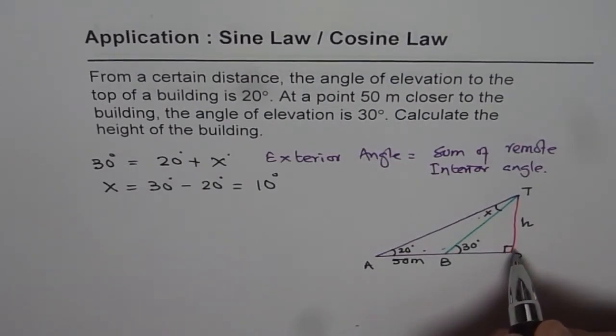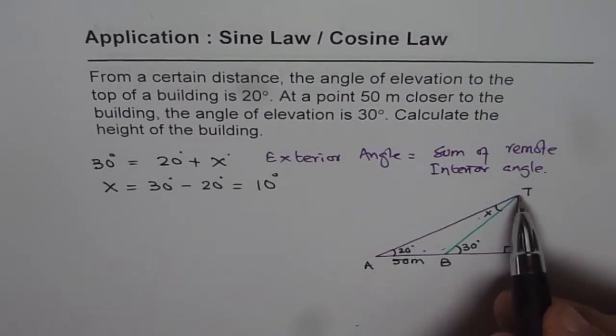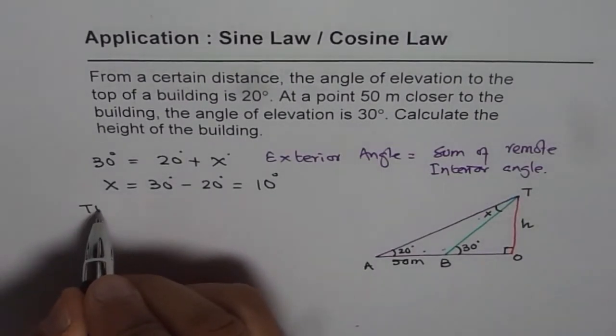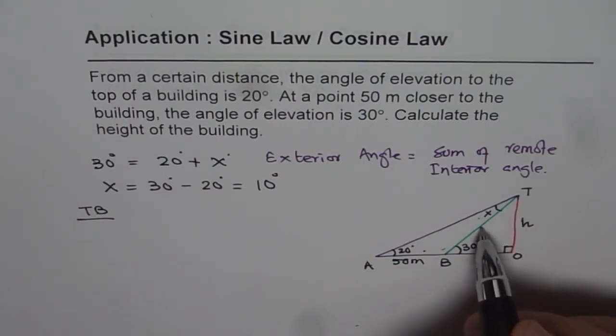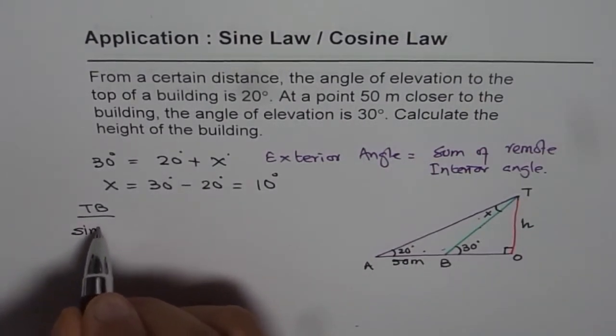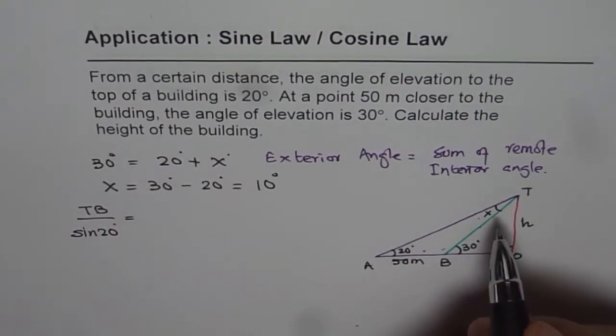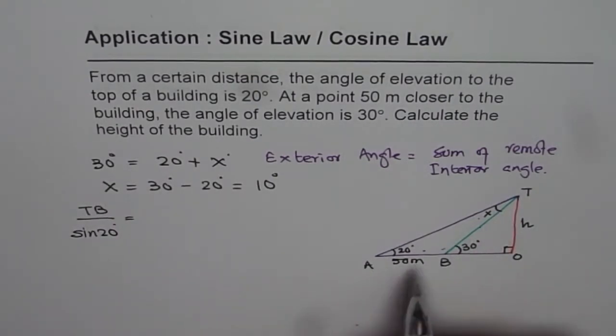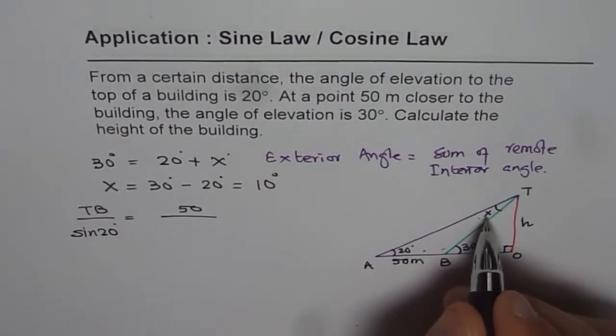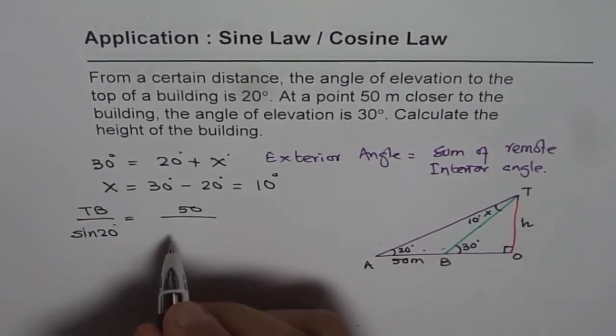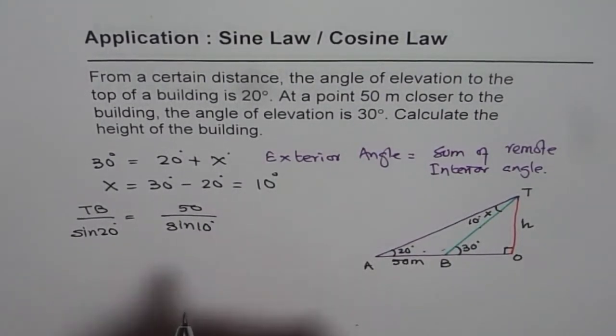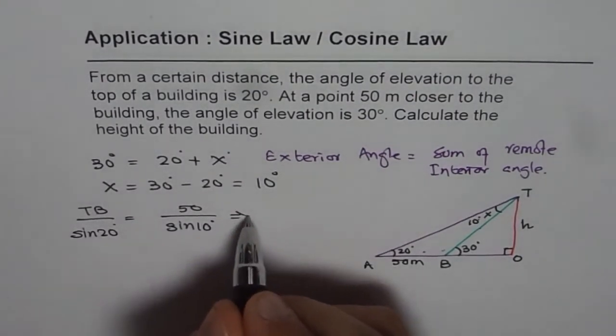So in this particular example, the side important to us is TB. Once we know TB, we know this height can be found using trigonometric ratios for right angles, right? So what is TB equal to? Let's say TB, the hypotenuse for the triangle TBO, should be equal to, let's first use sine law. So TB over sine 20 should be equal to the length 50 over the angle which is 10 degrees for us.